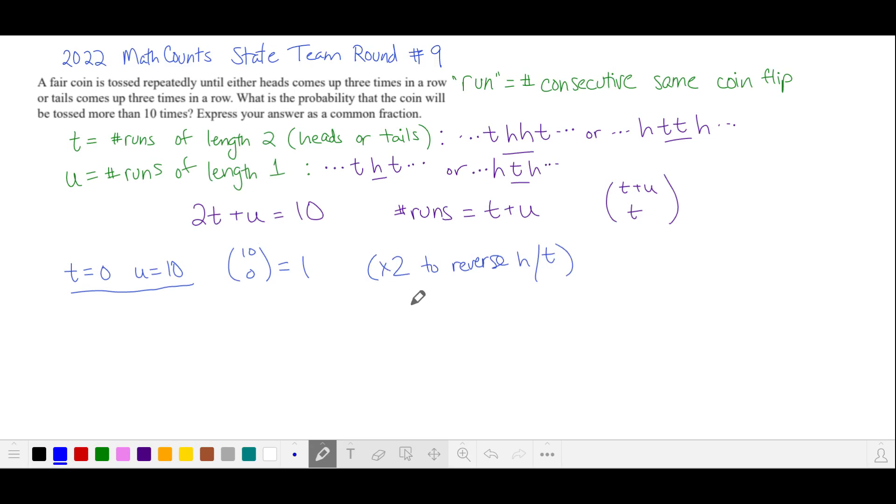I forgot to mention that we'll be multiplying all these quantities by 2 because we can reverse the first head or tail and reverse all the heads and tails in our sequence to get an equivalent sequence. So we'll multiply by 2 at the end.